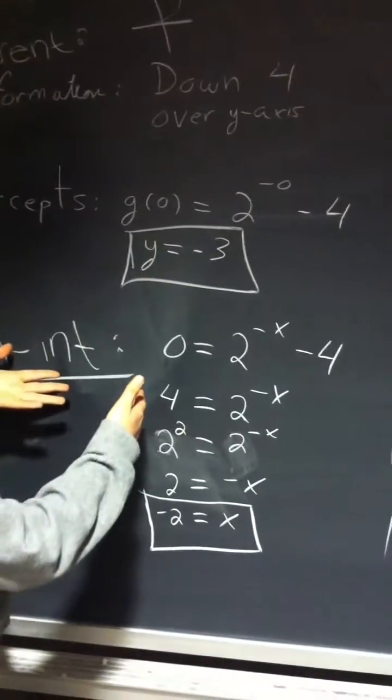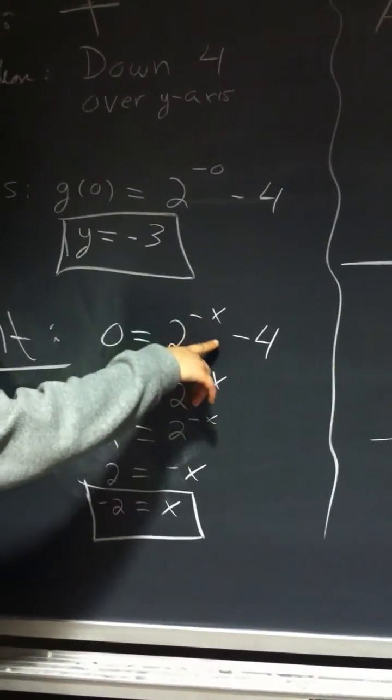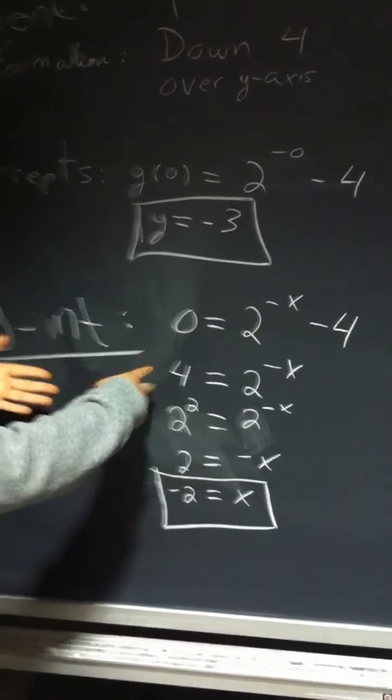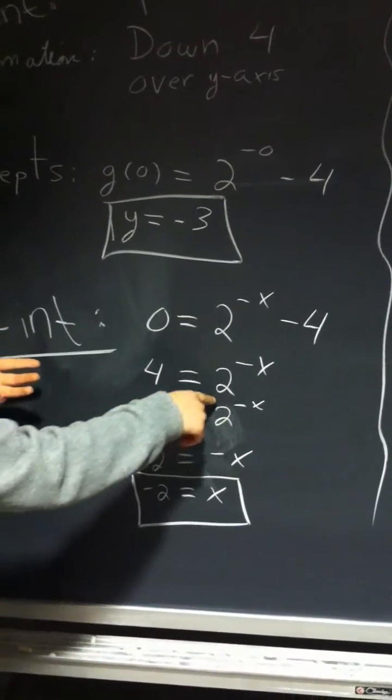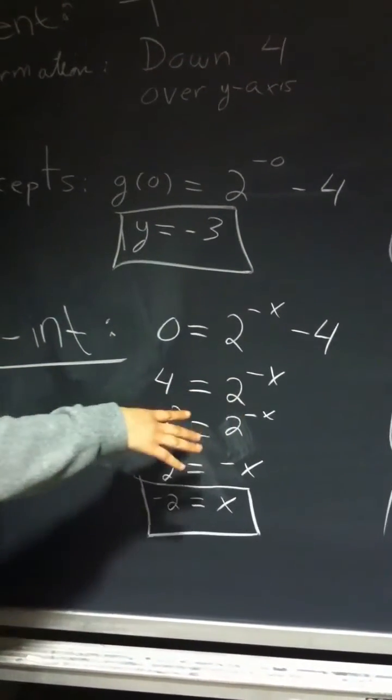And my x-intercept, you make y equal to 0. So it's going to be 0 equals 2 to the negative x minus 4. You bring the 4 to the other side. And then you're going to have 4 equals 2 to the negative x.